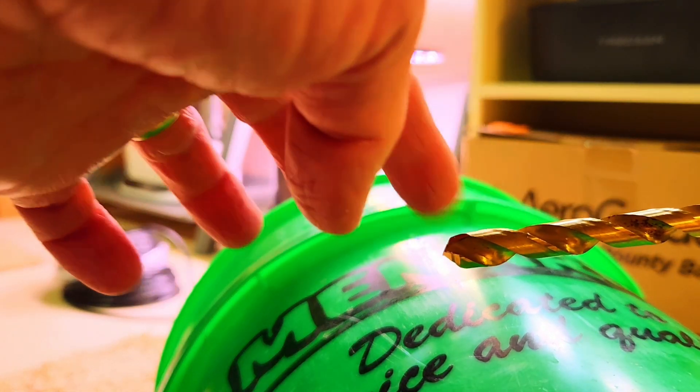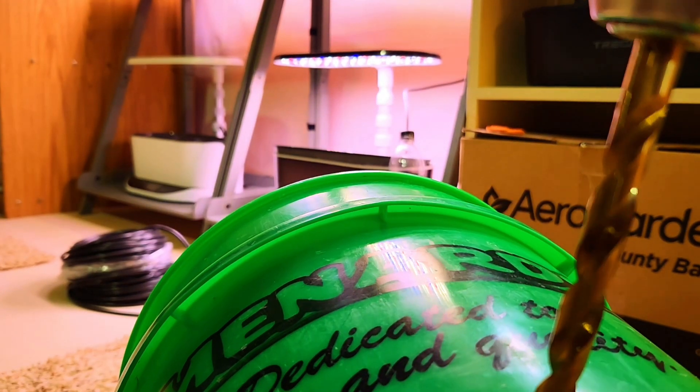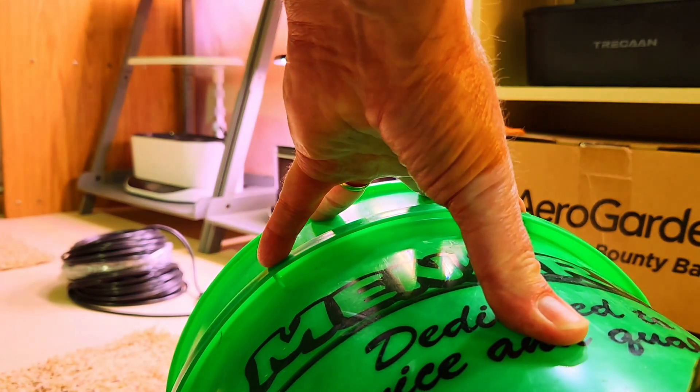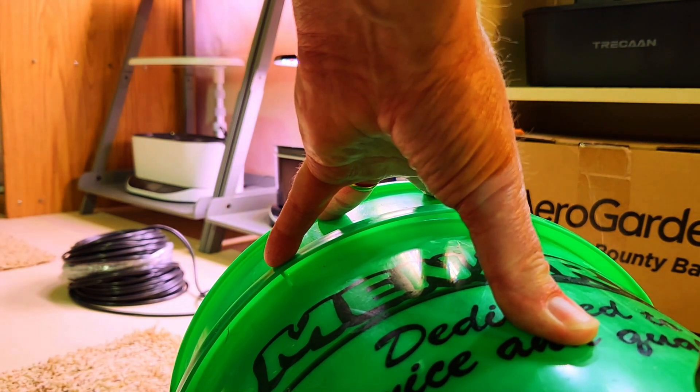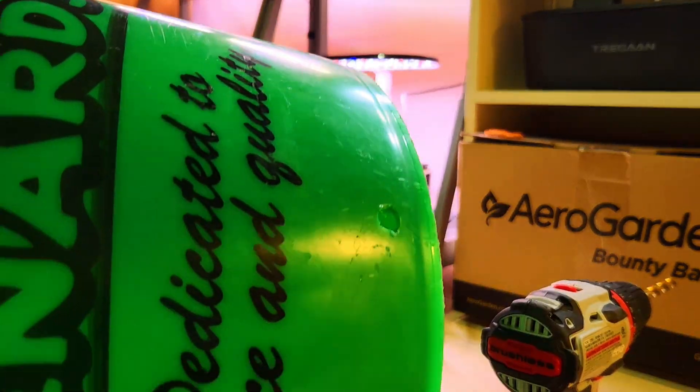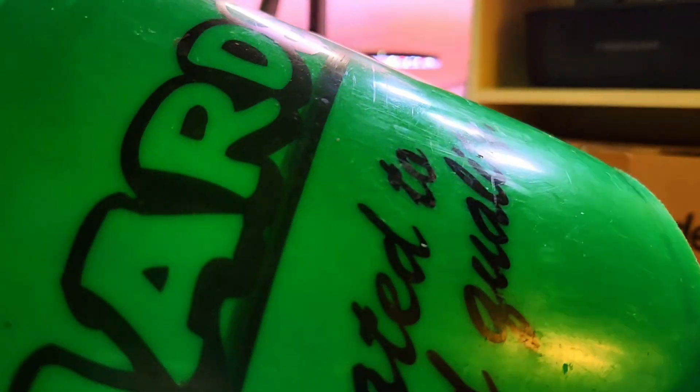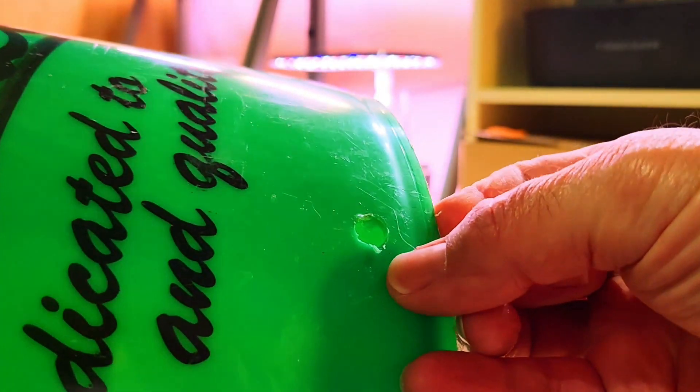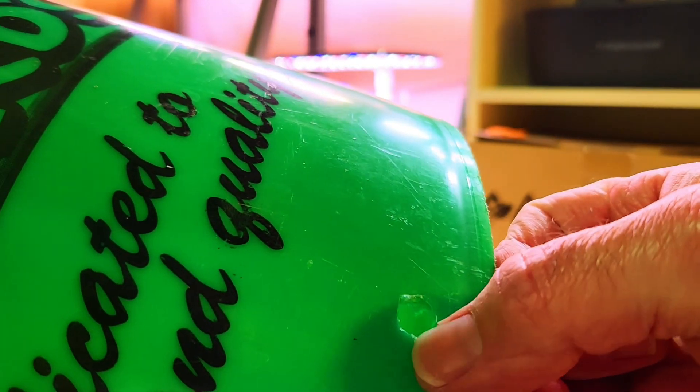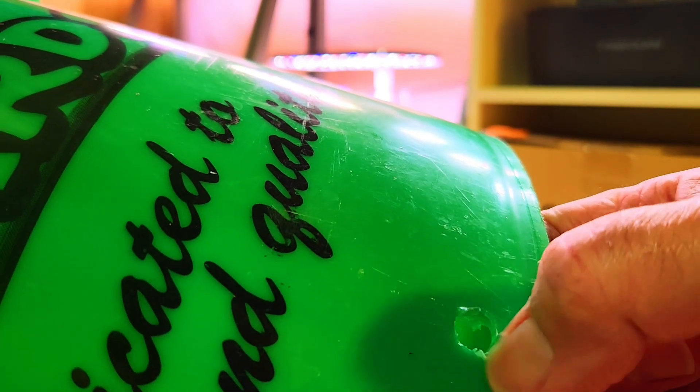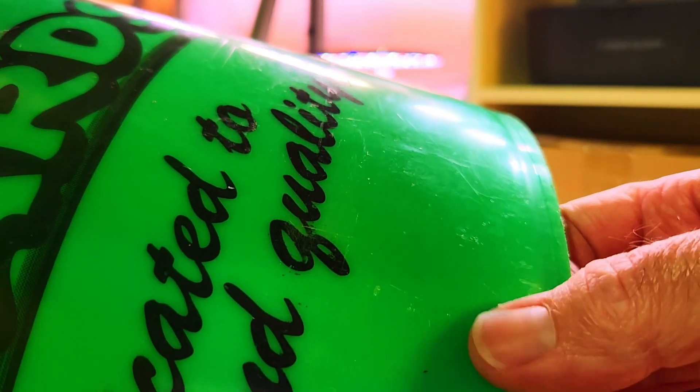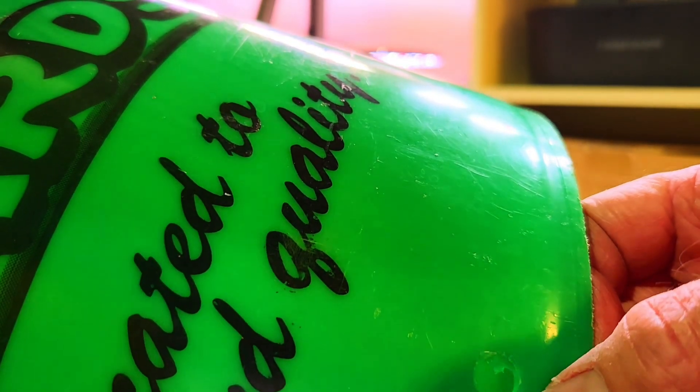This drill bit is 10 millimeters. After you have that hole drilled, you can notice along the edges that sometimes there's a burr from the drill going through. Feel free to clean that up a little bit, but be careful not to drill this hole any larger.